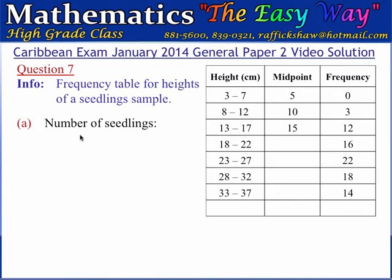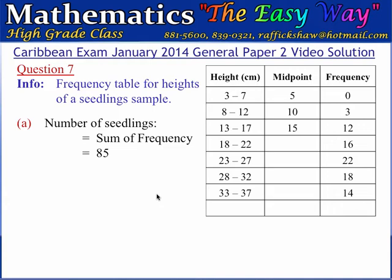The first question wants us to calculate the number of seedlings in the sample. The total number of seedlings is equal to the sum of all the frequency values. When we total these frequency values, the result is 85. So there are 85 seedlings in this sample.